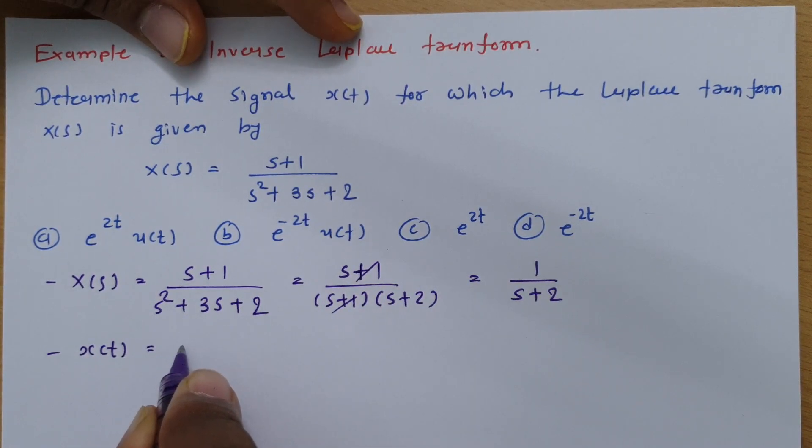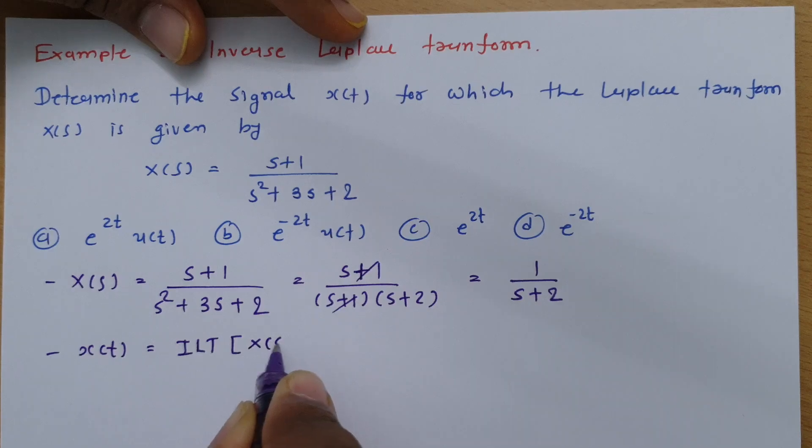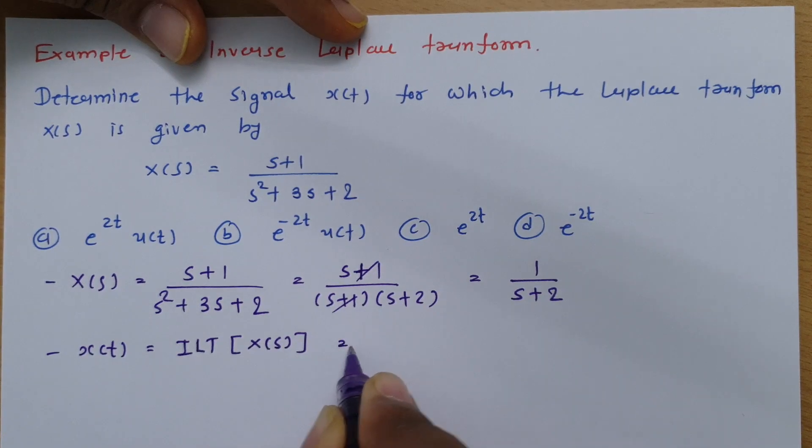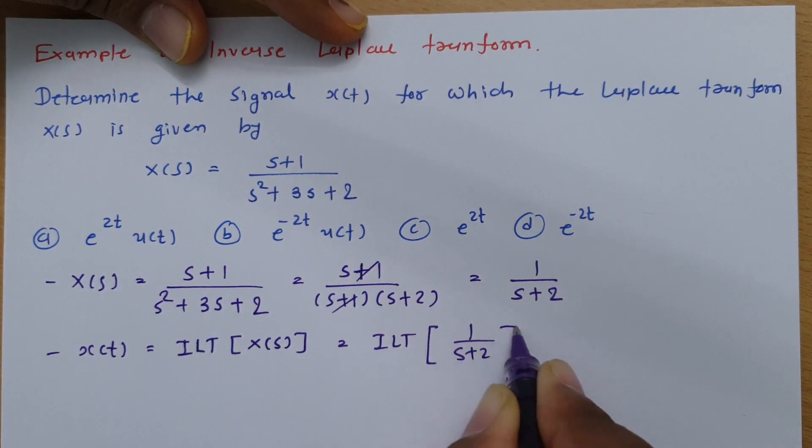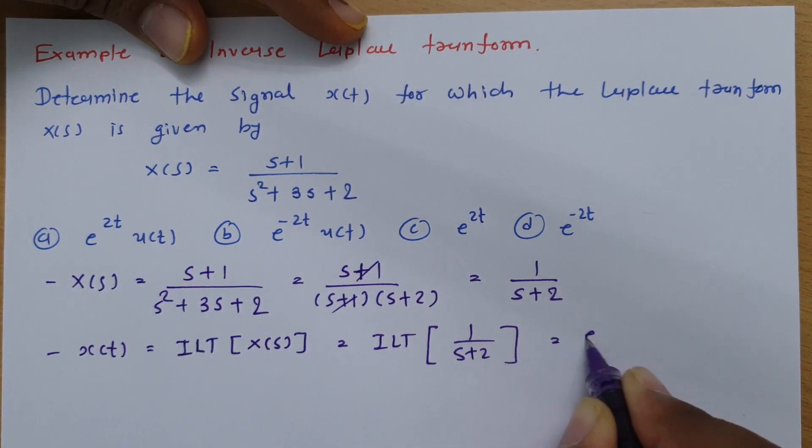So inverse Laplace transform of 1/(s+2) is e^(-2t)u(t).